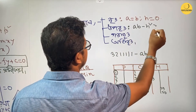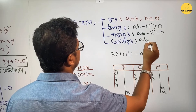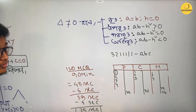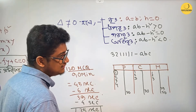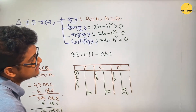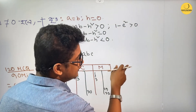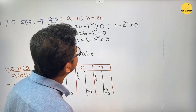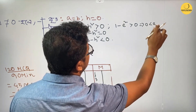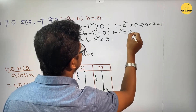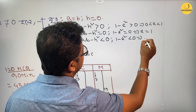ab minus H squared: if greater than 0, then 1 minus e squared is greater than 0, giving (1+e)(1-e). If 1 minus e squared equals 0, e equals 1. If 1 minus e squared is less than 0, then e is greater than 1.